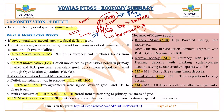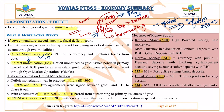Monetization of deficit was practiced until 1997, after which it was stopped because it goes against market norms and causes inflation — excess supply of money without a substantial increase in demand leads to rising prices. The FRBM Act was introduced in 2003 to bring fiscal discipline to the government, curbing excessive spending on loan waivers and other political gains. If the government breaches certain fiscal deficit limits, it has to answer to Parliament.